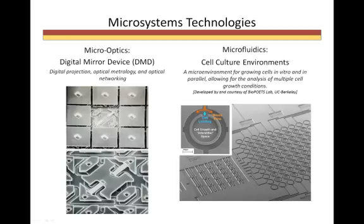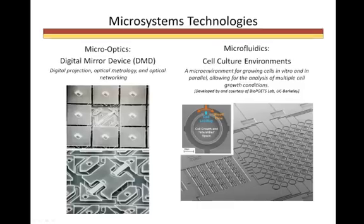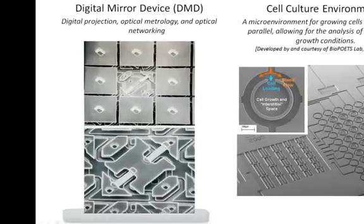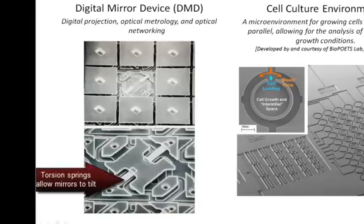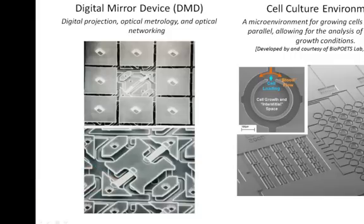Microoptics and microfluidics are two areas in which microsystems technologies has many applications. The figure of the digital mirror device, ART-DMD, is an example of an optical MEMS. This device has been quite successful in display technologies. A DMD is an array of micromirrors, with each mirror being between 5 micrometers to 20 micrometers per side. Each mirror is designed to tilt on into the light source or off away from the light source, and one mirror can be turned on or off over 30,000 times per second.